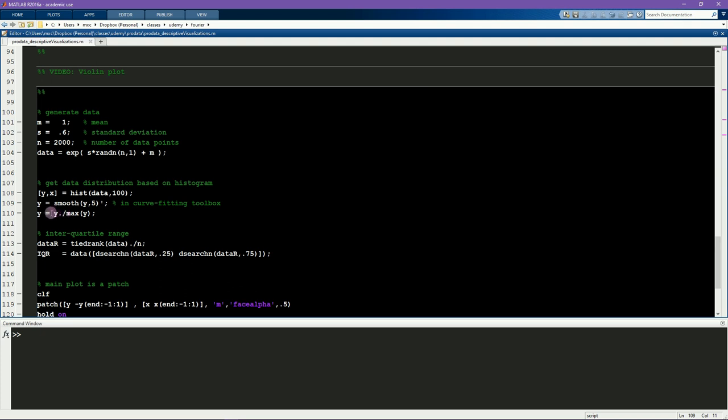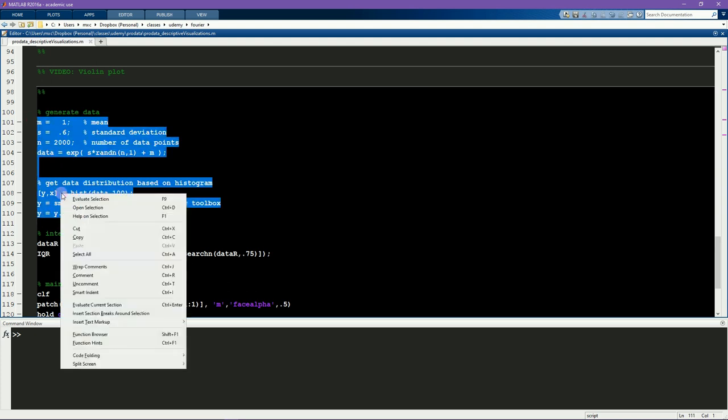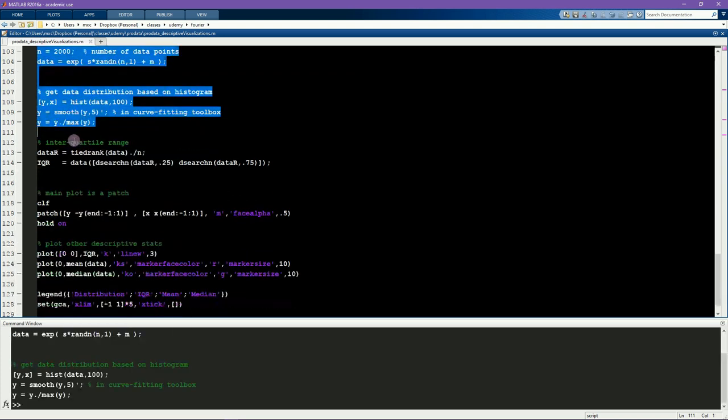And in this line, I max value normalize the distribution. Here I compute the interquartile range, which is the same as what you learned about in a previous video.